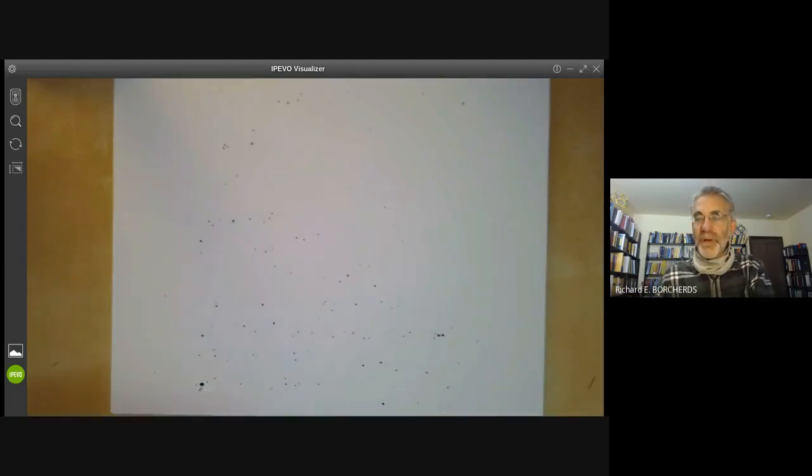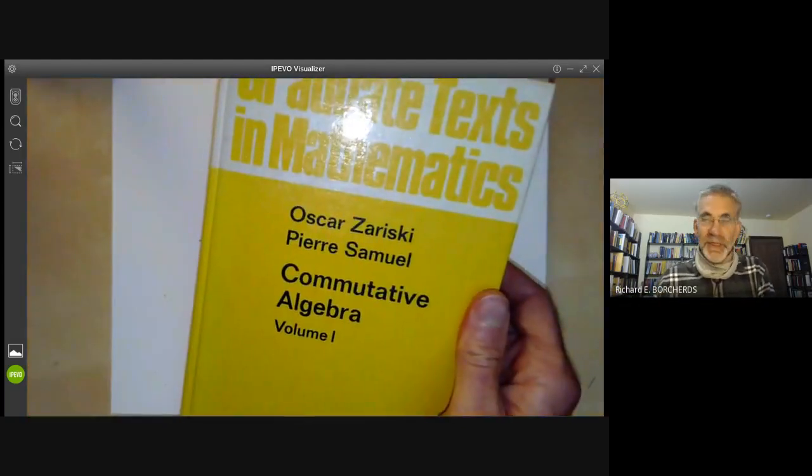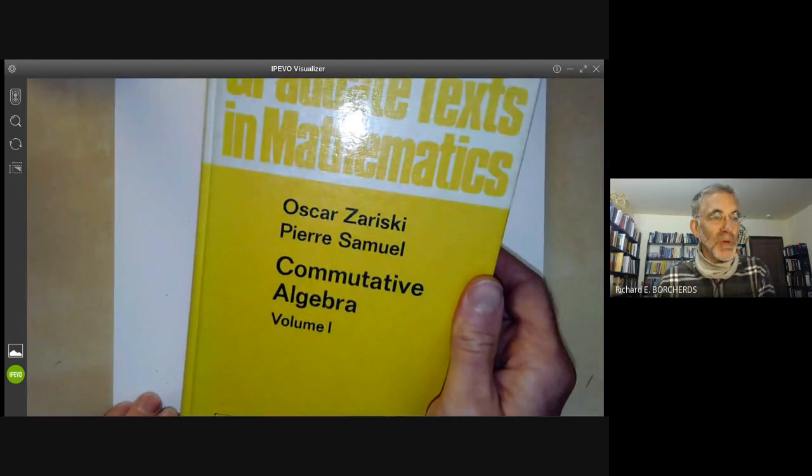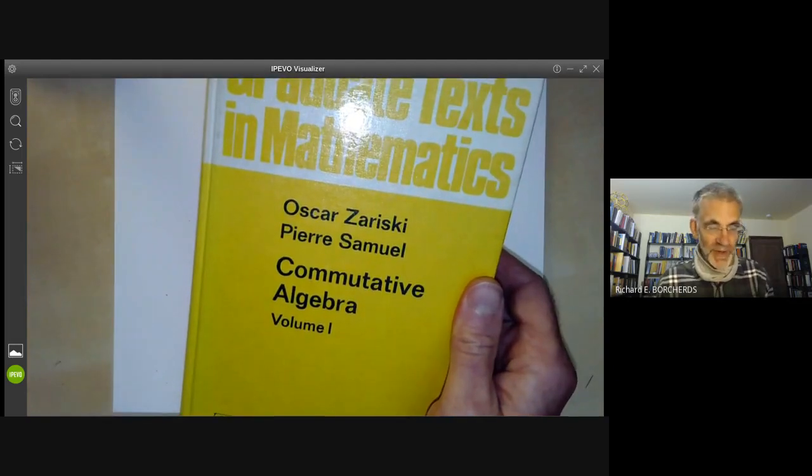Another classic book at a very similar level is the one by Zariski and Samuel, Volume 1, Commutative Algebra, which is an old classic. It's recently been reprinted as a low-cost paperback by Dover.